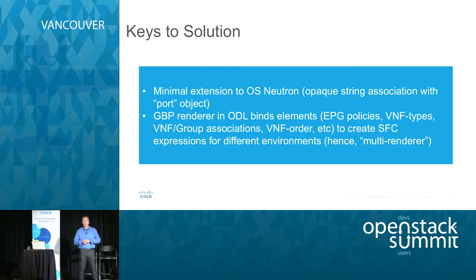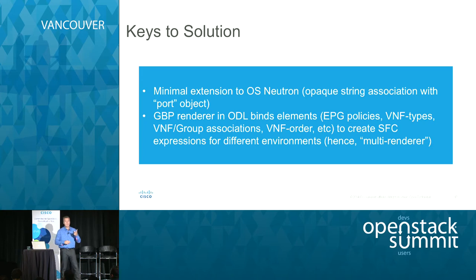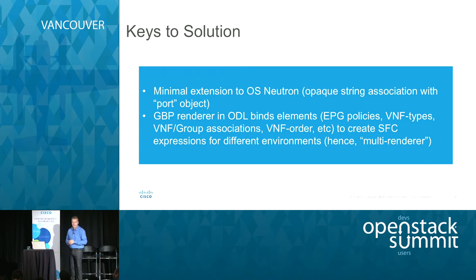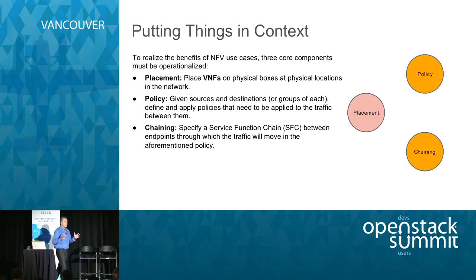The keys in OpenStack are some extensions to Neutron through which we can pass data down to OpenDaylight associated with the port object - there are a number of conversations and discussions in sessions this week about this. Being able to take that data and bind it to the policies associated with group-based policy and the endpoint groups - their type, associations, order - and pass this down to OpenDaylight to orchestrate that chain. These expressions for different environments enable OpenDaylight to be a multiple renderer for those service chains and appliances being created.